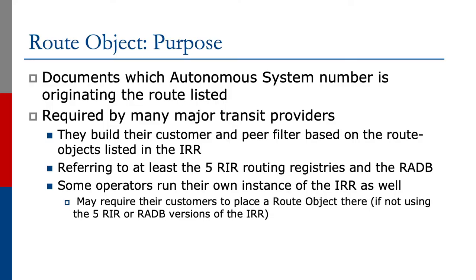Let's have a look at some of the objects that we need to use. The first one is the route object, which documents which autonomous system number is originating the route listed. This is required by many major transit providers today. They build a customer and peer filter based on the route objects listed in the IRR, referring to at least the registry-based routing registries and the RADB.